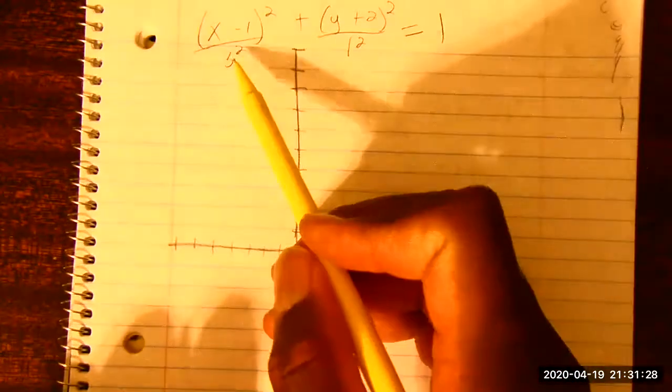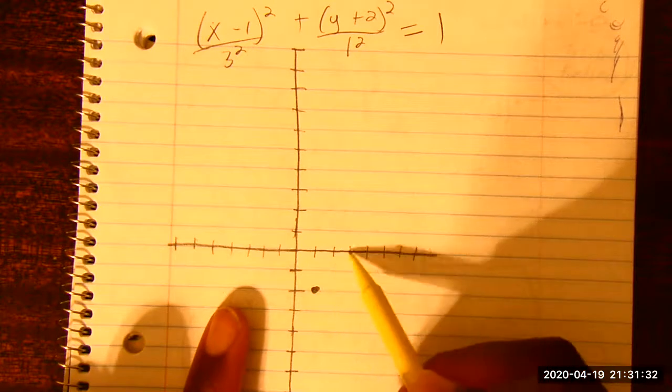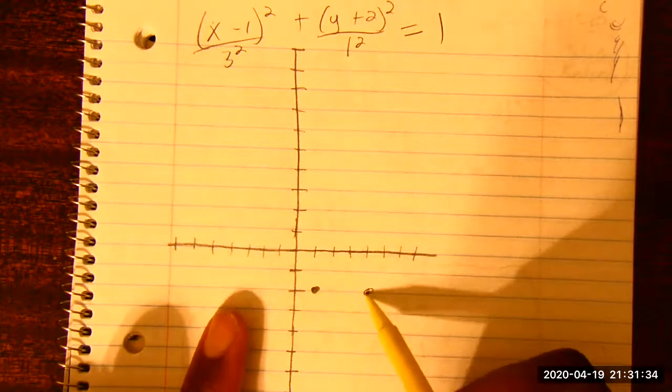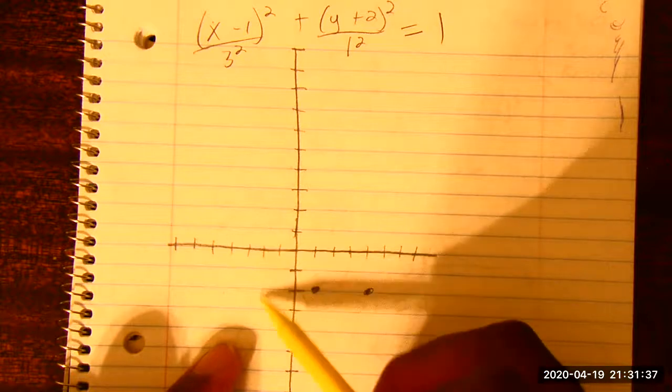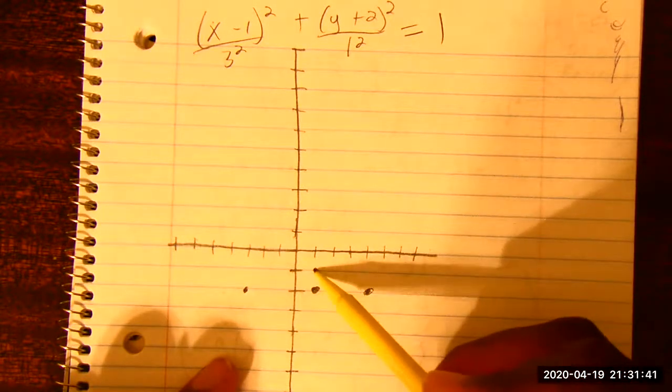Doing math, math is similar to riding a bicycle. You can't learn it by simply watching. You have to take part and practice it. So let me find my center. I'm going to move right one unit and I'm going to move down two units. That's the center of my ellipse.